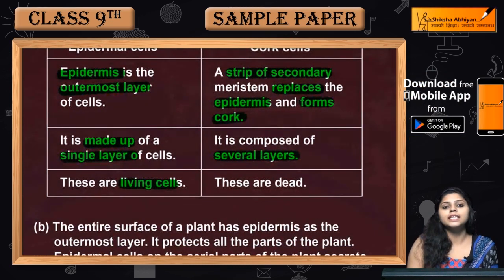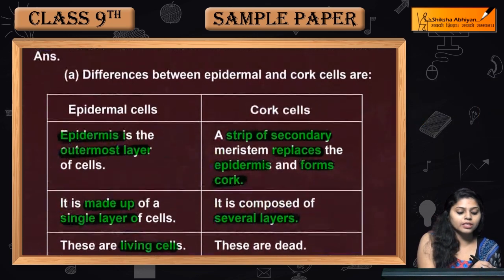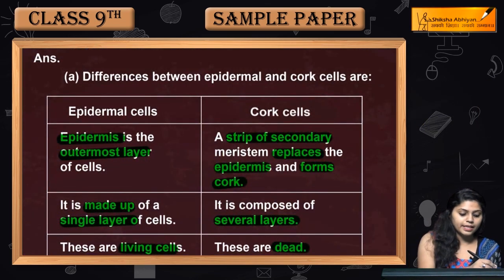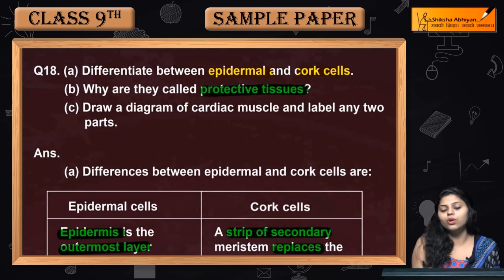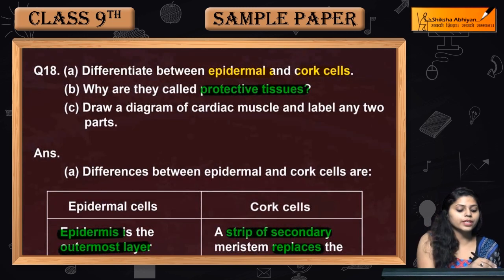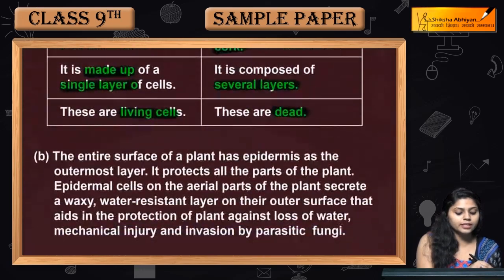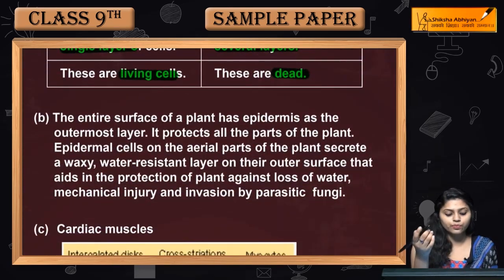Epidermal cells are living cells, whereas cork cells are dead cells. Next question: why are they called protective tissues? Why are epidermal and cork cells called protective tissues?